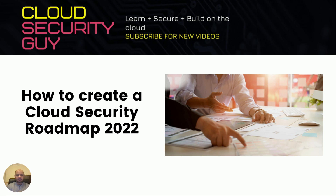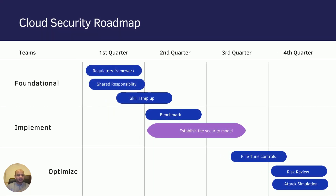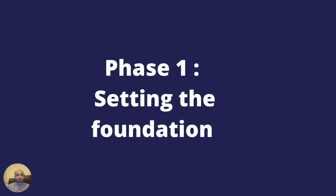This is a draft roadmap — not too high level and not too detailed, because if it's too high level it really doesn't help anybody, and if it's too detailed you can't apply it to your organization. I've deliberately avoided talking about basic security activities like risk assessments, vulnerability assessments, penetration testing, and user reviews — those you're already doing. This roadmap is specifically for your cloud journey and is divided into three phases: Foundational, Implement, and Optimize.